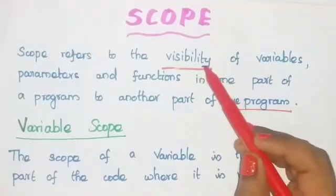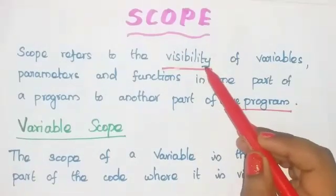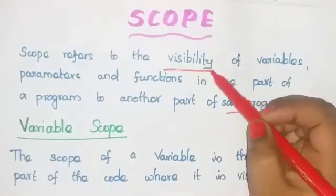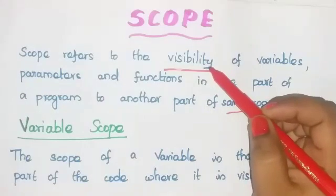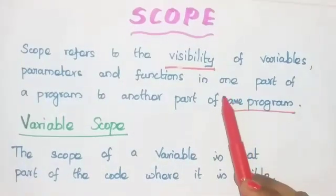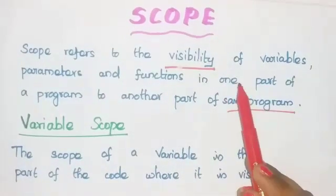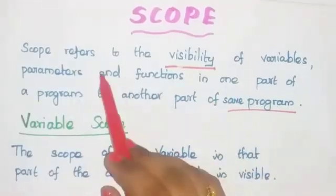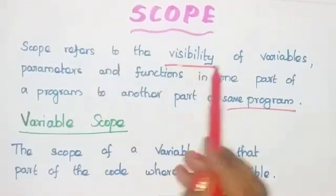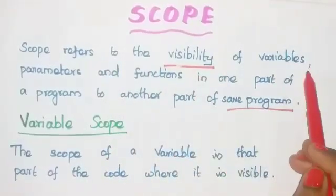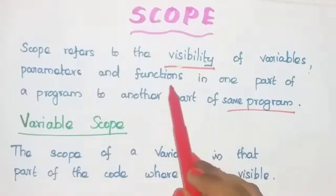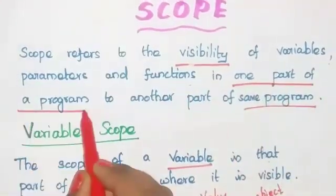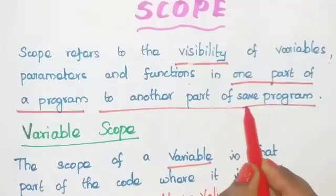So it determines the visibility of your variable. Note this point: visibility. Visibility means you can access or see something in a particular area of your code. So scope refers to the visibility of your variables, parameters, and functions in one part of your program to another part of your same program.